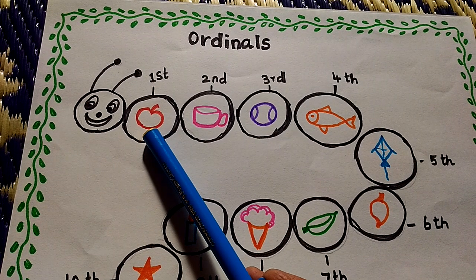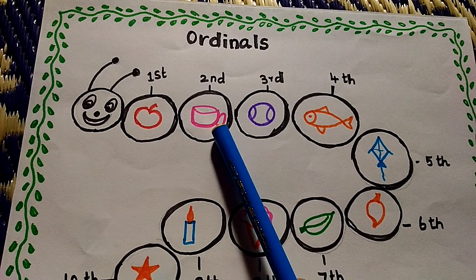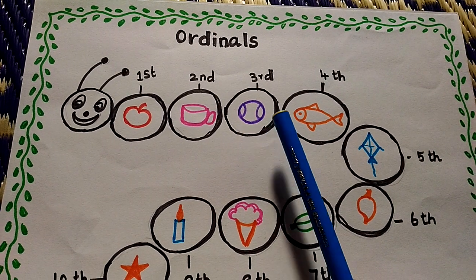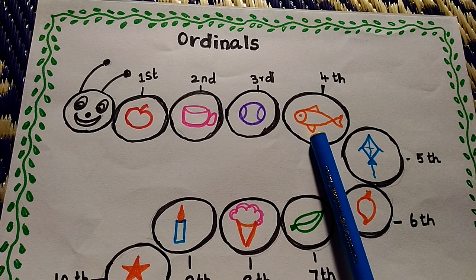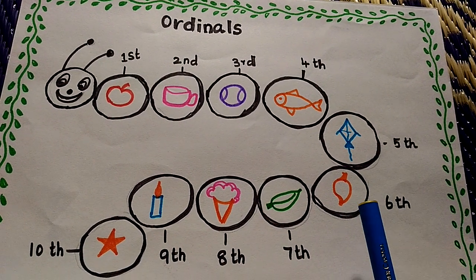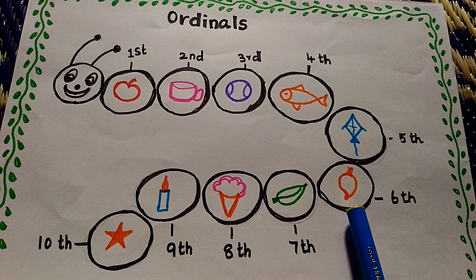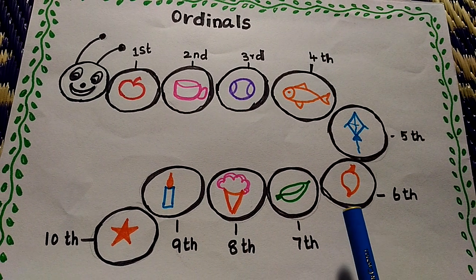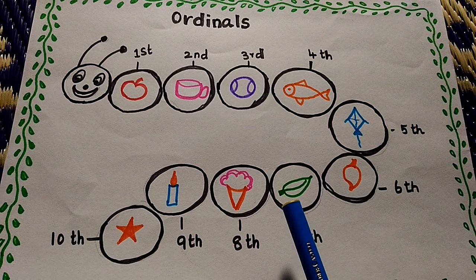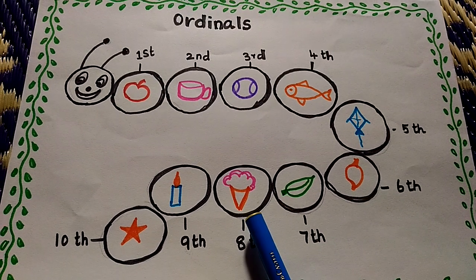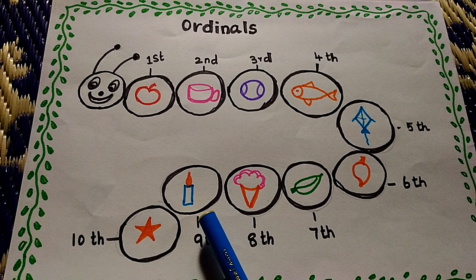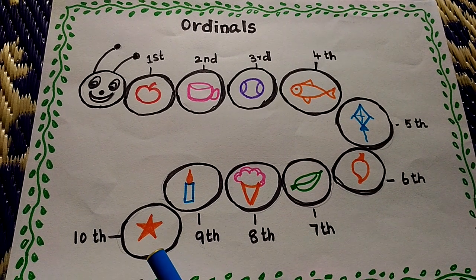See here. First one is apple. Second one, cup. Third one, ball. Fourth one, fish. Fifth one, kite. Sixth one, mango. Seventh one, leaf. Eighth one, ice cream. Ninth one, candle. Tenth one, star.